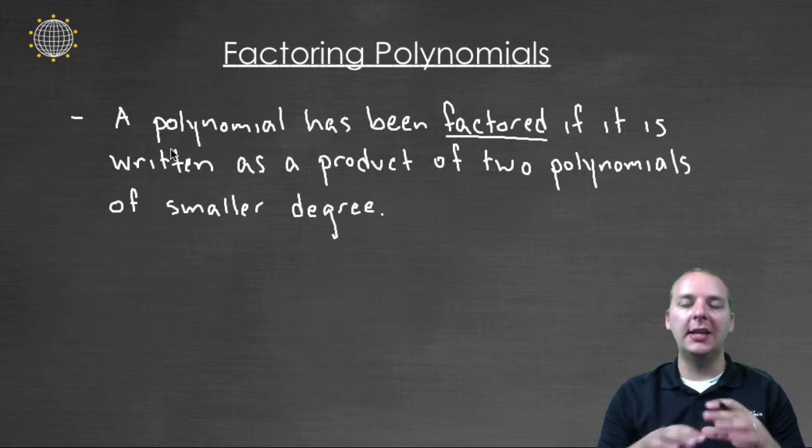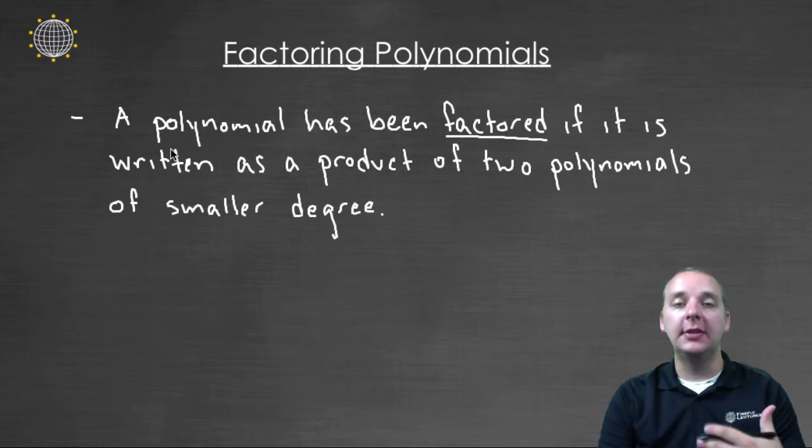A polynomial has been factored if it is written as a product of two polynomials with smaller degree than the original. Let me show you a couple examples.